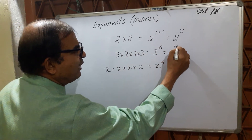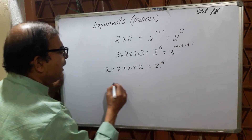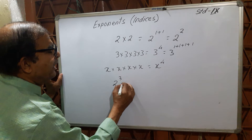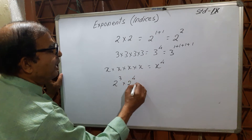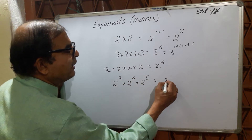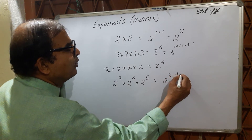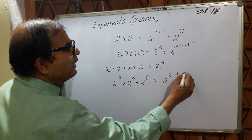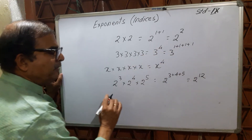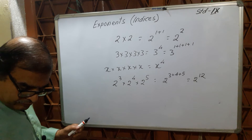For example, 3^(1+1+1+1). If you have 2^3 × 2^4 × 2^5, you can write this as 2^(3+4+5), which equals 2^12.